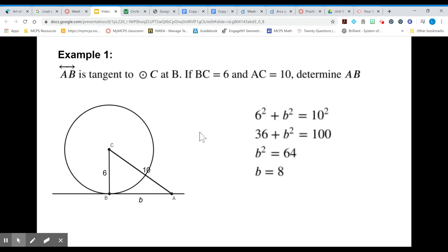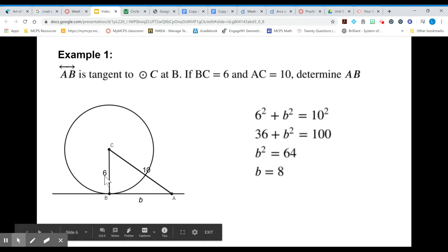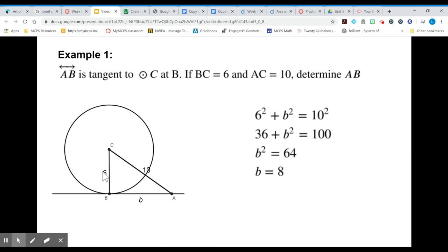We know that 6 squared plus B squared equals 10 squared. We subtract 36 from both sides. B squared equals 64 and B equals 8. You might also notice that 6 divided by 2 is 3, 10 divided by 2 is 5. So we really have a 3, 4, 5 triangle that is scaled by a factor of 2.